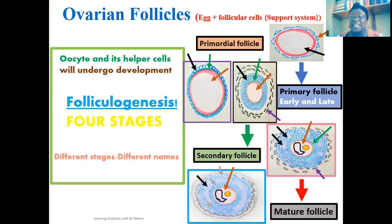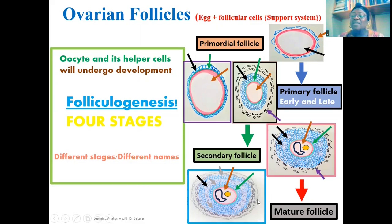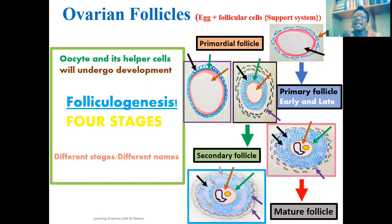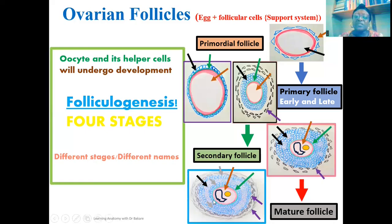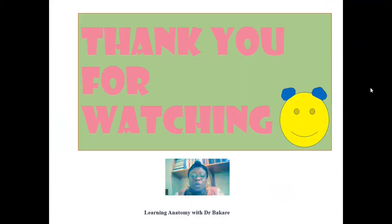At the mature ovarian follicular stage, the zona pellucida is fully matured — this is the eggshell, arrowed in green. The theca cells are arranged into layers: the teca interna on the inside and the teca externa more externally, both arrowed in purple. This completes the transformation from the primordial follicle with a single layer of flat cells all the way to the mature ovarian follicle with all its structural modifications.